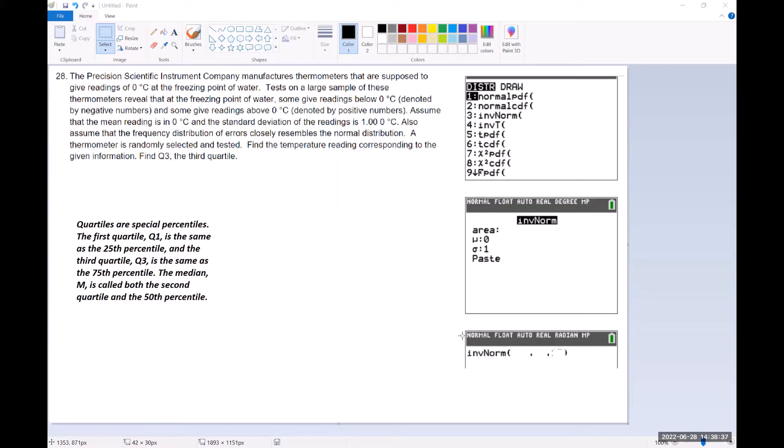Tests on a large scale of these thermometers reveal that at the freezing point of water, some give readings below zero degrees, denoted by negative numbers, and some give readings above zero degrees, denoted by positive numbers. Assume that the mean reading is zero degrees Celsius and the standard deviation of the readings is one degree Celsius. Also assume that the frequency distribution of errors closely resembles a normal distribution.